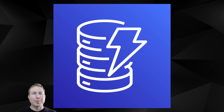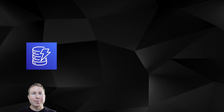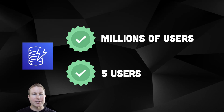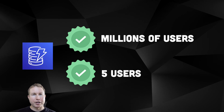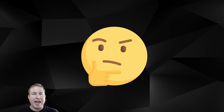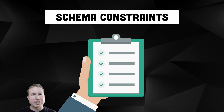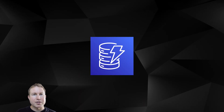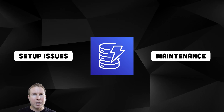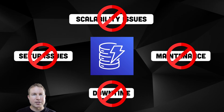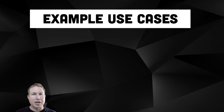You should consider AWS DynamoDB if your app needs to scale to millions of users, but you should also consider it if your app only has a few users and you need a database solution that's free or nearly free. The only catch is that your schema needs to conform to some very specific constraints, but if your application can accommodate those constraints it can save you from a ton of setup, maintenance, availability, and scalability problems that other databases have.